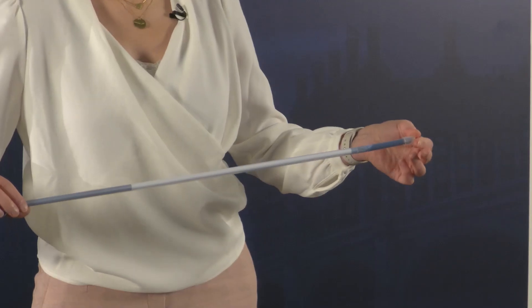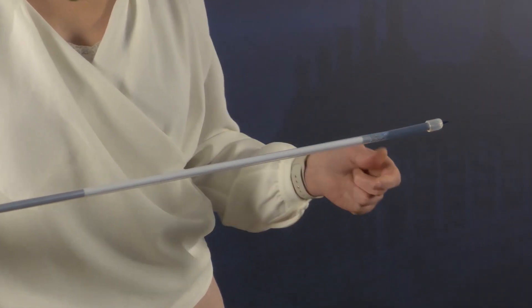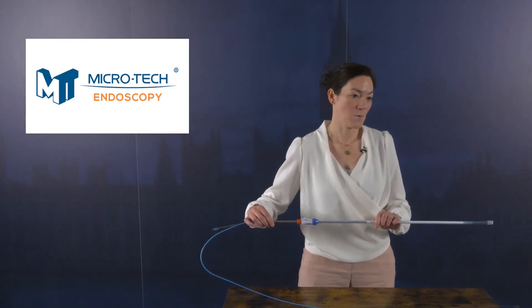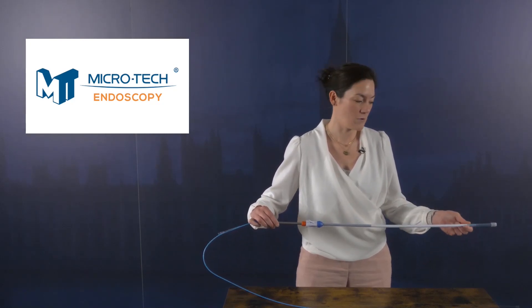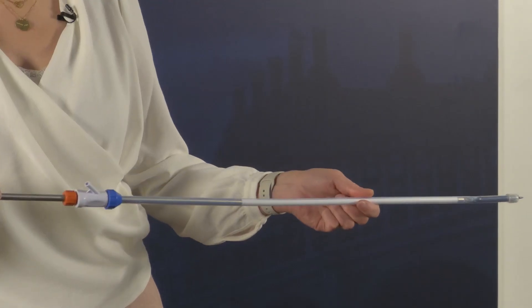you have the guide wire, which you introduce in this blue piece here at the end. It comes out at the other end, and just as you would do with a dilator or another normal stent, you introduce the stent into the patient.